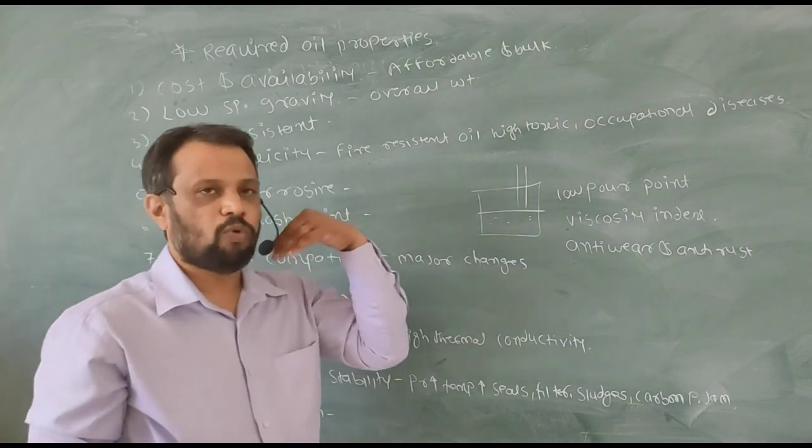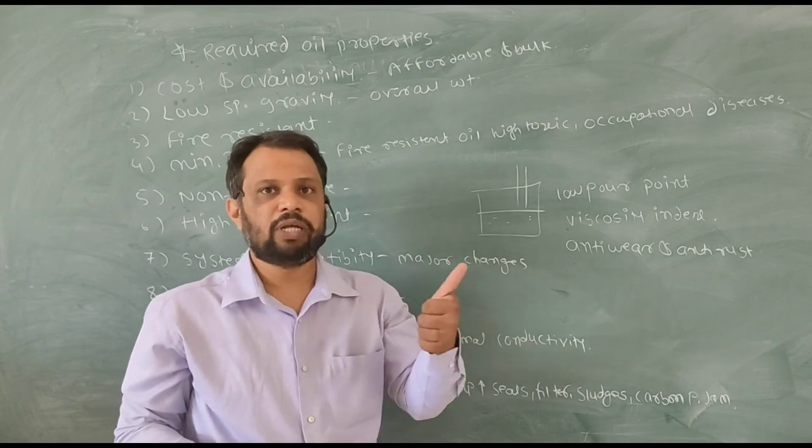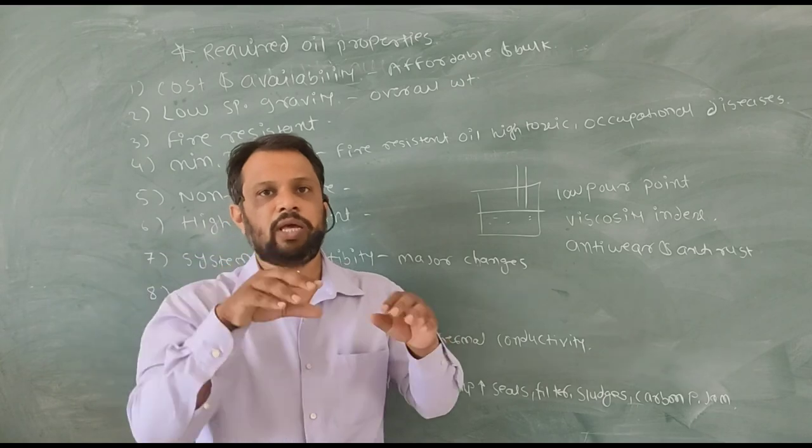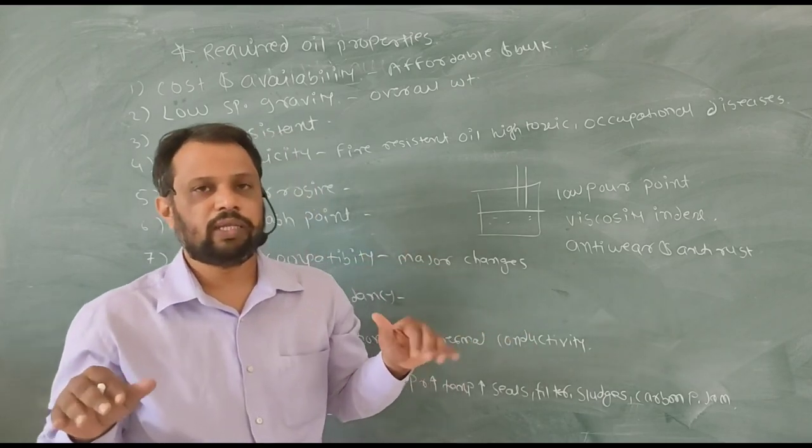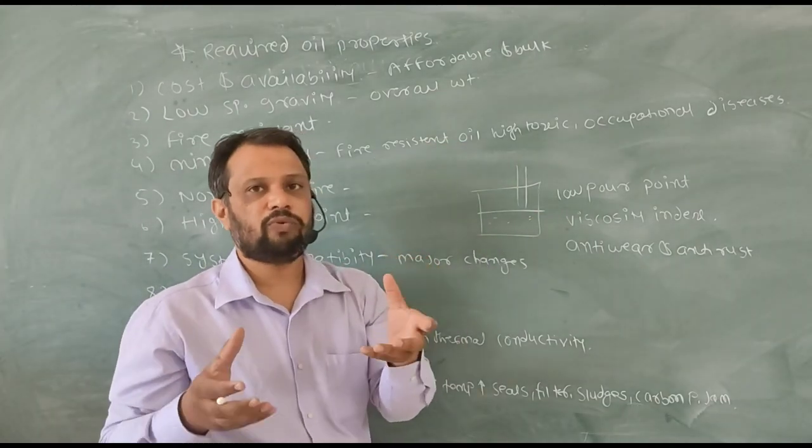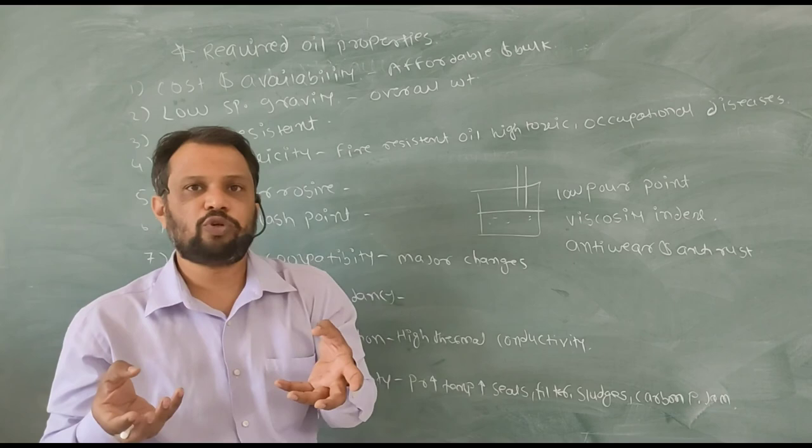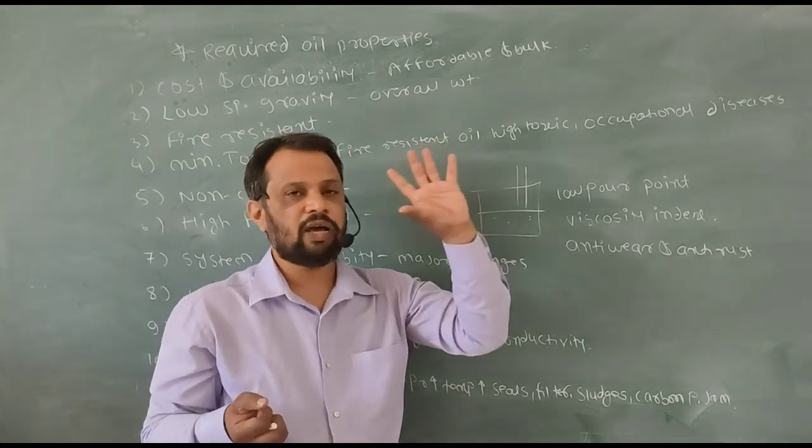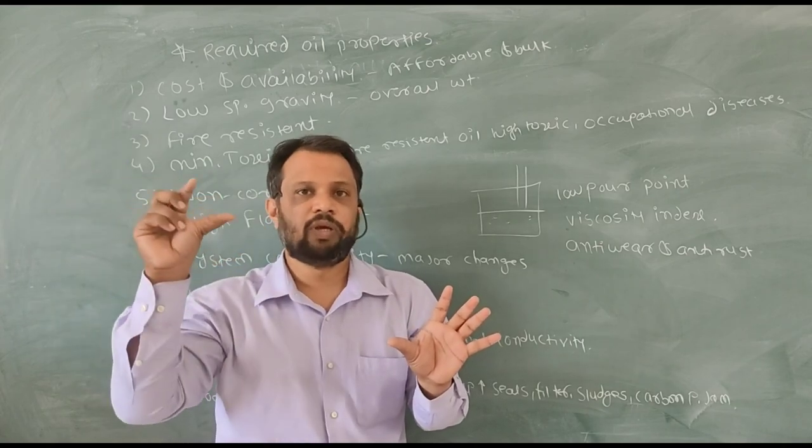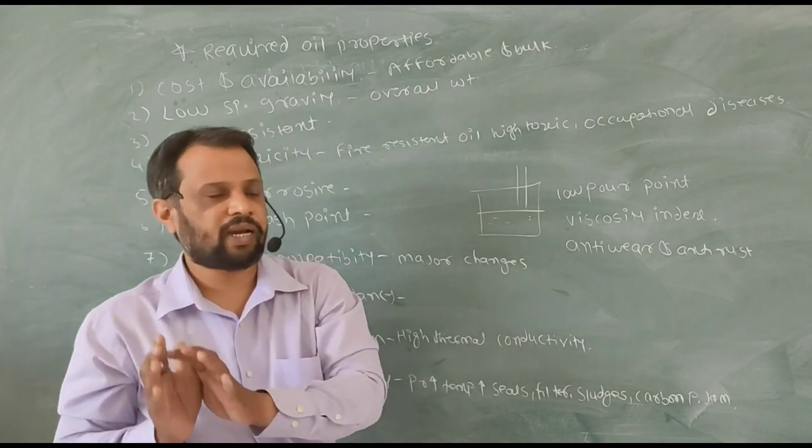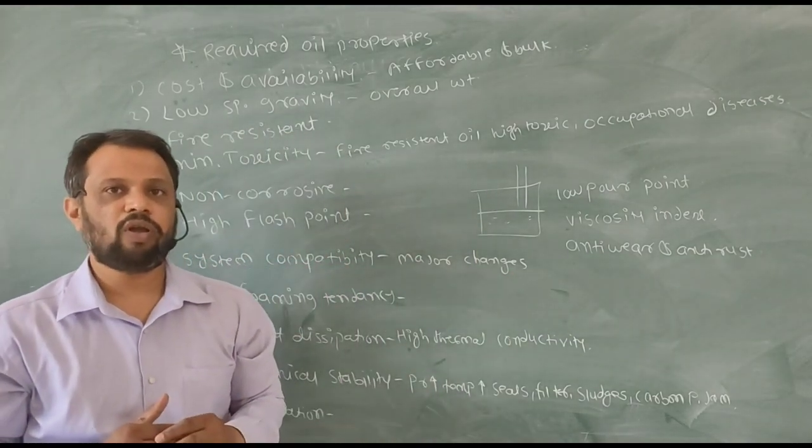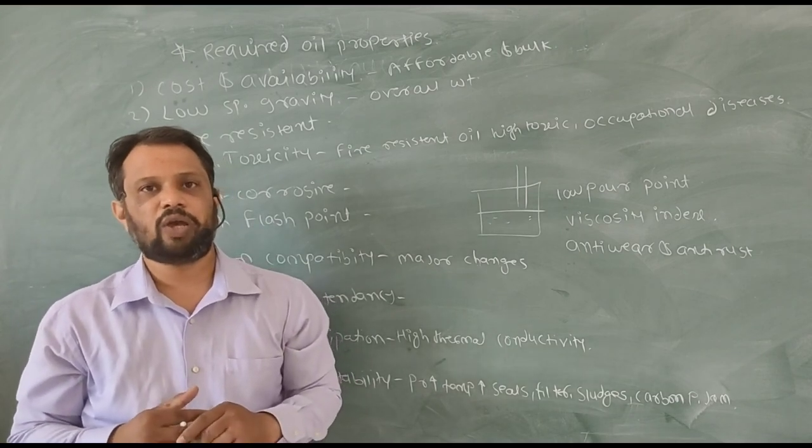After that there are some more properties also. Demulsibility - oil must separate water. If water mixed in your oil it easily separate water from oil, that property is called demulsibility. After that low pour point - the freezing point should be low. Viscosity index high - if temperature goes beyond extreme it should work satisfactorily. After that anti-wear and anti-rust. These are the some properties of hydraulic oil which must be considered while selecting any hydraulic oil for system.